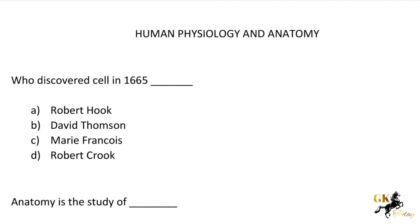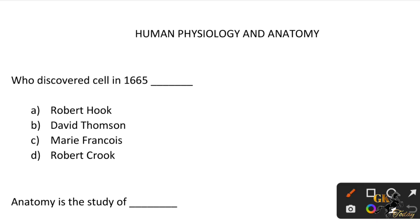Human Anatomy and Physiology MCQ. First question: Who discovered the cell in 1665? Option A: Robert Hooke. Option B: David Thompson. Option C: Mary Frances. Option D: Robert Hooke. The correct answer is Option A: Robert Hooke.